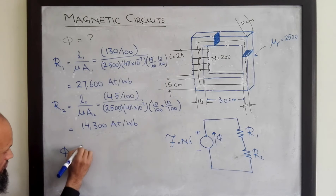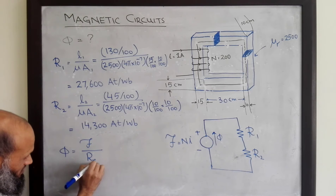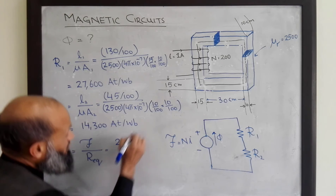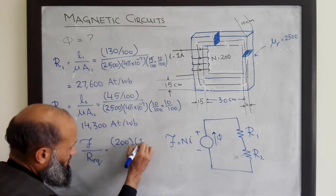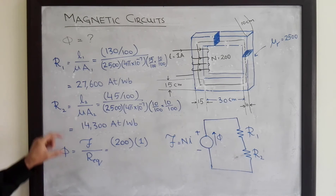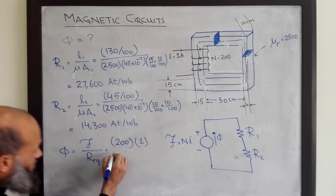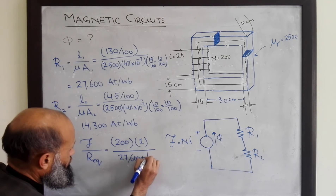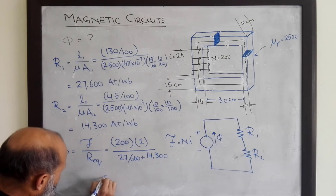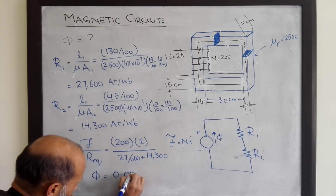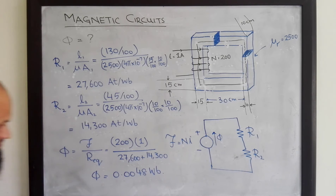Flux equals MMF divided by equivalent reluctance. MMF in this case is 200 turns multiplied by 1 ampere. The equivalent reluctance is the sum of R1 and R2, since they are connected in series: 37,600 plus 14,300. Performing these calculations, flux comes out to be equal to 0.0048 weber. This is how we analyze magnetic circuits.